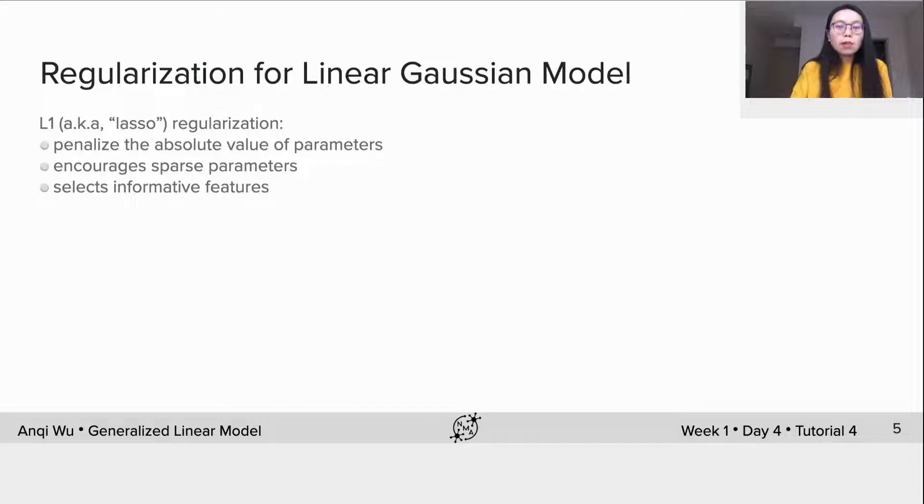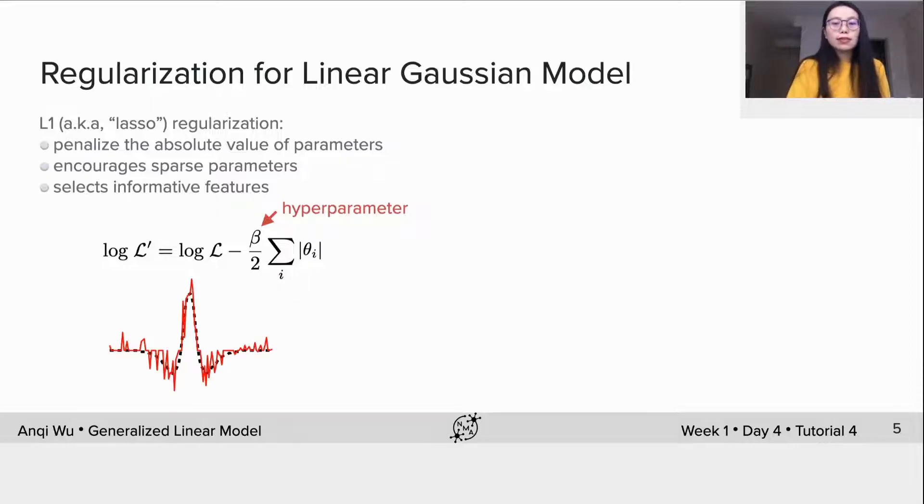Another popular regularization is L1 regularization, which is also known as lasso regularization. Different from L2, it penalizes the absolute value of the parameters and thus encourages sparse solutions. The L1 penalty pushes many feature weights to zero and effectively selects informative features. Here is the mathematical form, and here is the estimate from L1 penalty. You can see many feature weights are now zero. We thus mitigate the issue of more features than data samples by throwing away some features.